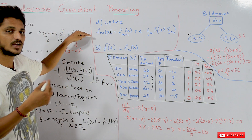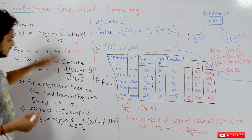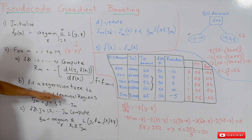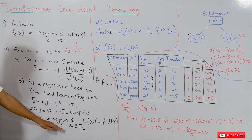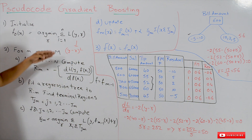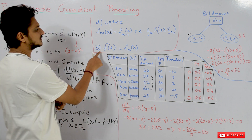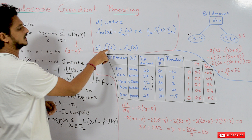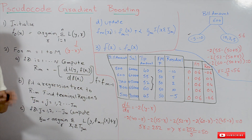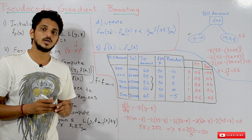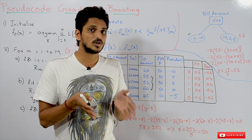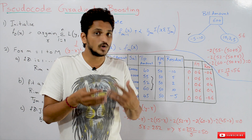We repeat this process for M models — calculating residuals, applying a decision tree, computing new prediction values — and so on. The third and final step is: after applying all M models, the final prediction f_M(x) is taken as the output. This is the complete pseudo code for gradient boosting for regression.